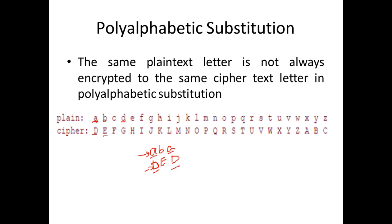But in a Polyalphabetic Substitution Cipher, this is not the case. Once when you have A and the output is D, the next time A repeats in your plaintext the output can be G. So for the same plaintext we can have a different ciphertext output. That kind of cipher is called a Polyalphabetic Substitution Cipher.